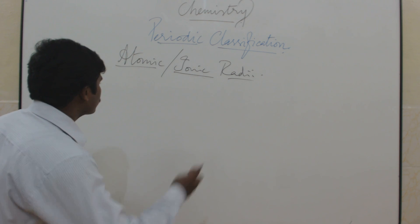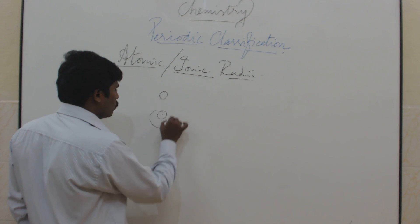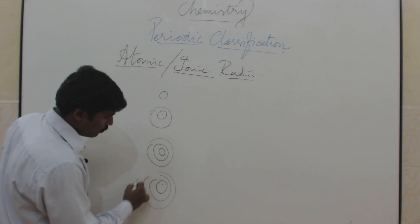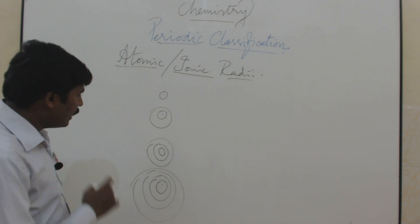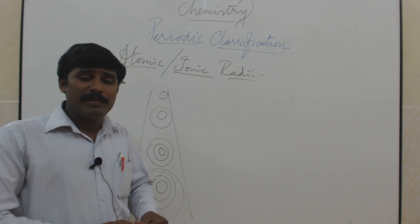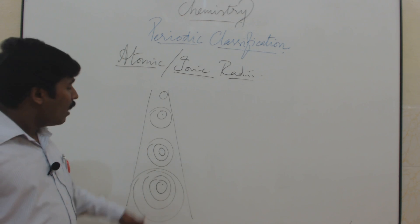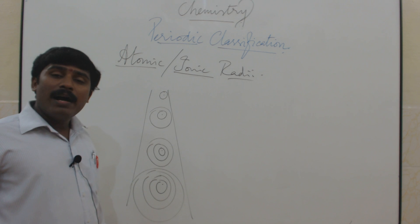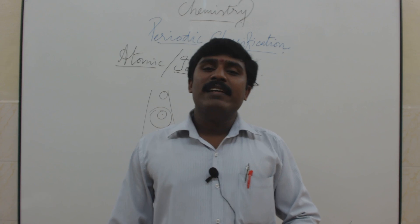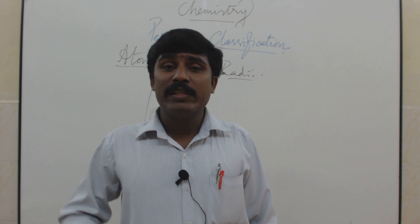Why does atomic size increase going down a group? Going down the group, atomic size increases because the extra electrons enter a new shell. For example, lithium, sodium, potassium, rubidium, cesium, francium — each element down the group has electrons entering a new shell, so the atom gets larger.